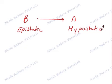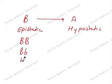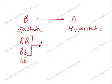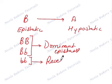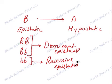Now in which form can B suppress A? There are three options: it can be homozygous dominant, heterozygous, or recessive. If the epistatic gene suppresses in its dominant form then it will be called dominant epistasis, and if it suppresses in its recessive form then it will be recessive epistasis.